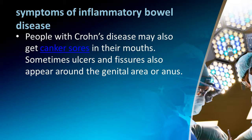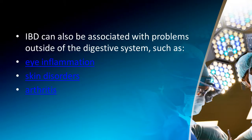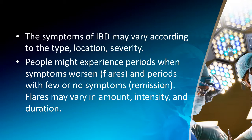IBD may also present with canker sores in the mouth, and ulcers and fissures around the genital area or anus. It can also be associated with problems outside the digestive system such as eye inflammation, skin disorders, and arthritis. The symptoms of IBD may vary according to type, location, and severity. People might experience periods when symptoms worsen — called flares — and periods with few or no symptoms, called remission.